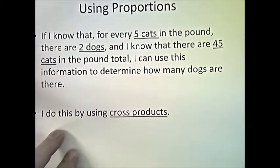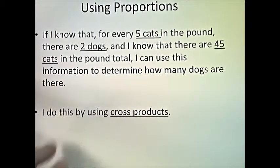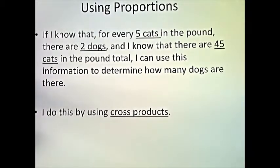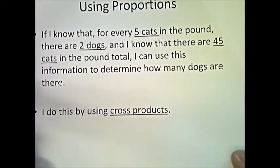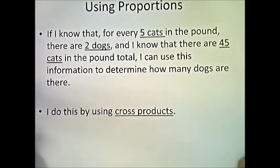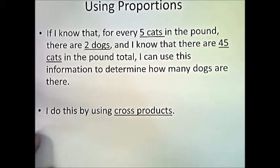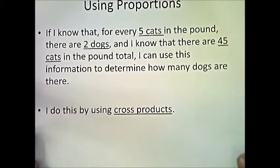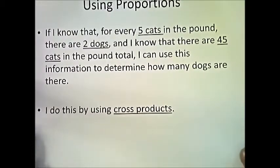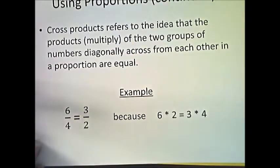Here's an example: if I know that for every 5 cats in the pound there are 2 dogs, and I know there are 45 cats total, how can I figure out how many dogs there are if the ratios are equivalent? The ratio is 5 cats to 2 dogs, and I counted 45 cats — but I don't have time to count all the dogs. You can solve this using what's called cross products.